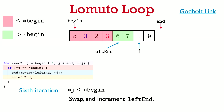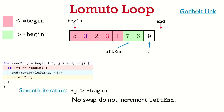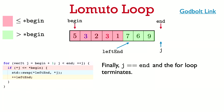In the sixth iteration, j points to 1, which is less than the pivot, so the if condition is true. We swap 1 and 6 — the element pointed to by leftend with the element pointed to by j — and increment leftend. The invariant still holds: everything in the red region is at most the pivot, everything in the green region is greater than the pivot. In the seventh iteration, the element pointed to by j is bigger than the pivot, so the if condition is false — no swap, no leftend increment. We increment j, but now j equals end, so the for loop terminates.